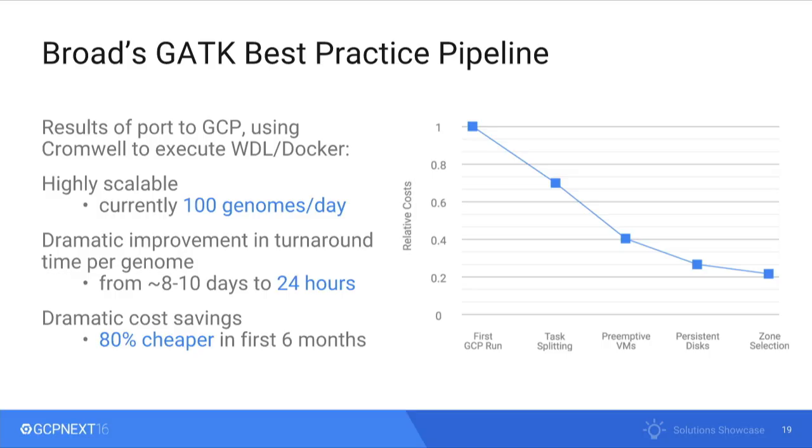With this, we began to port our data factory to the cloud, and here are the results. It's highly scalable — we can currently run 100 genomes a day and just finished an even bigger run this morning. We've had a dramatic improvement in turnaround time: from 8 to 10 days per sample down to under 24 hours. And we've achieved over 80% cost reduction from our very first GCP run six months ago — by splitting tasks into right-sized machines, only paying for CPUs and memory each task uses, and using preemptible VMs.